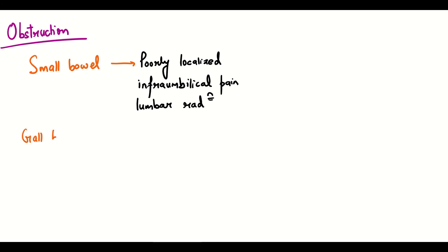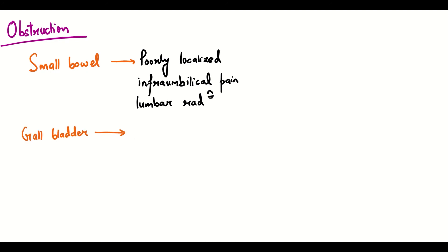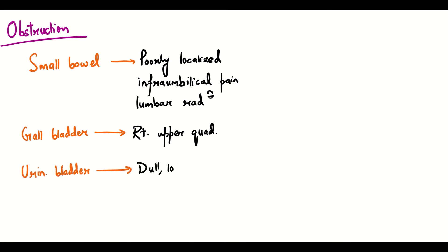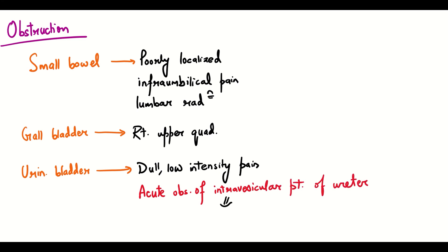Obstruction in the gallbladder will give rise to pain in the right upper quadrant as can be expected from its anatomic location. If the common bile duct is obstructed, it will also give rise to referred pain in the upper lumbar region; however, one can differentiate it in that the pain of origin will be epigastric. Obstruction of the urinary bladder will give rise to dull low-intensity pain in the suprapubic region. In contrast, acute obstruction of the intravesicular portion of the ureter will give rise to severe suprapubic and flank pain, which will radiate to the penis, scrotum and the inner part of the thigh.